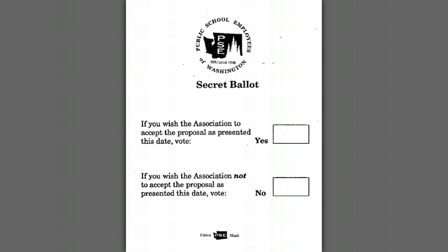The secret ballot is going to be used basically when a motion has been made and someone of the membership has requested that the vote be conducted by a secret ballot, versus the showing of hands or saying yes or no openly. So that is the first document.